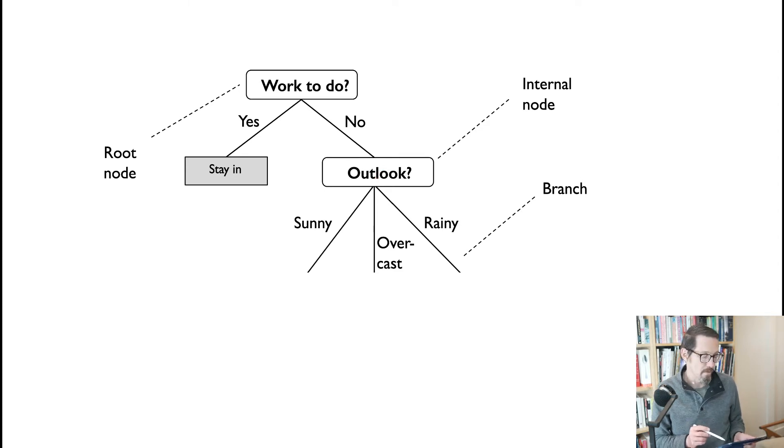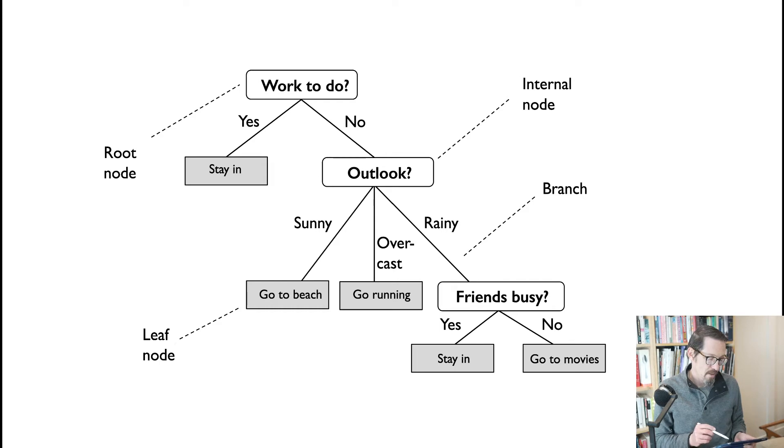So if we have work to do, we're going to just stay in today. And if we don't have work to do, we have to decide, hey, what is the weather outlook? We have three possible choices. And each one of these choices, as I said, is a branch in the tree.